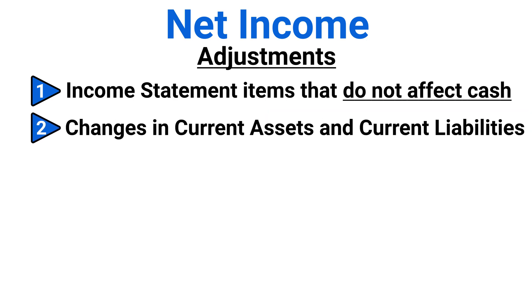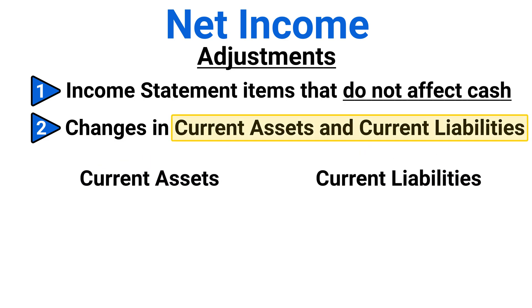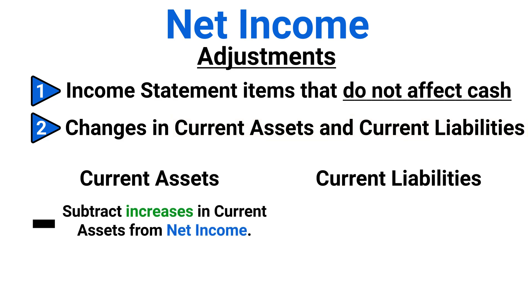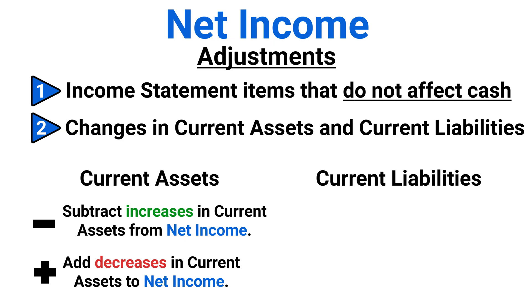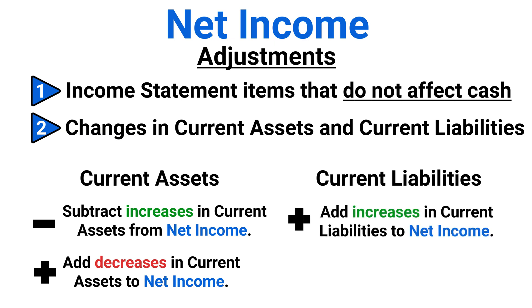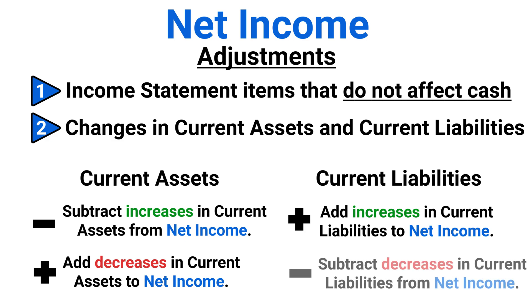Now, the second set of adjustments is for changes in current assets and current liabilities. And to help us out, we can follow a few guidelines. When a current asset account balance increases, subtract the increase from net income. When a current asset account balance decreases, add the decrease back into net income. And when a current liability account balance increases, add the increase back in to net income. When a current liability account balance decreases, subtract the decrease from net income.